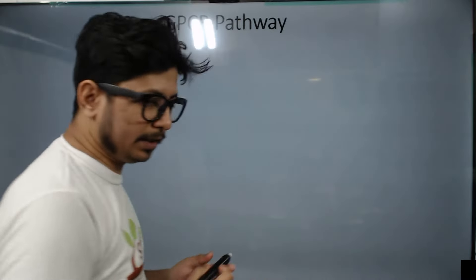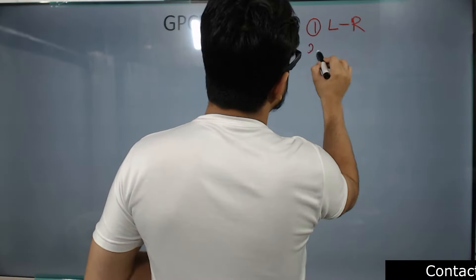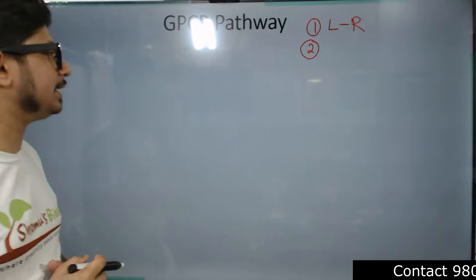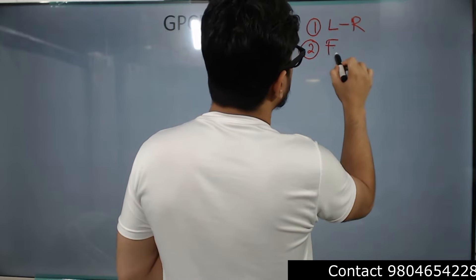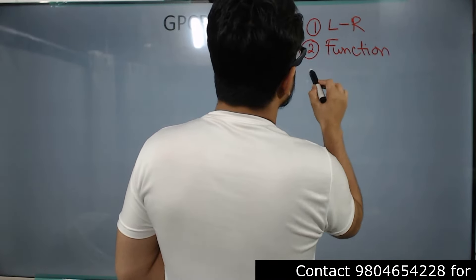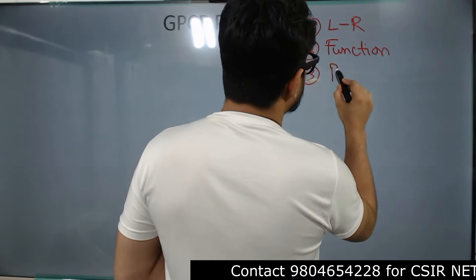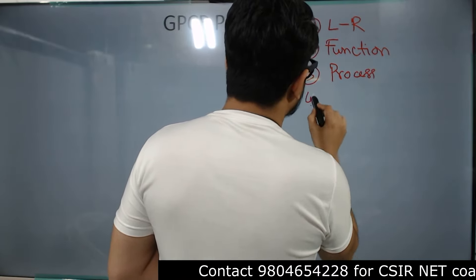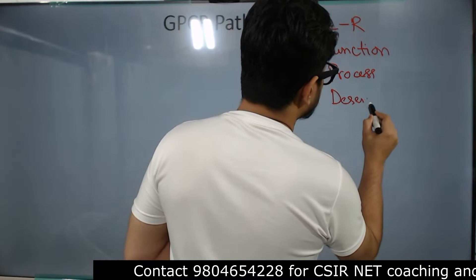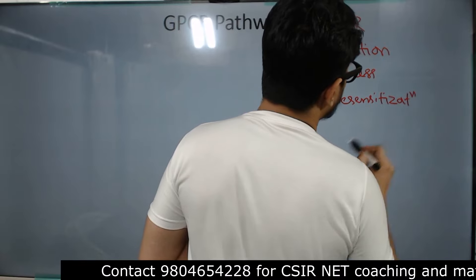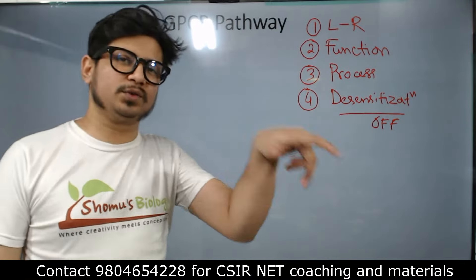The first important thing for any cell signaling process is the signaling molecule, ligand and receptor. The second important point is the role or function. The third important point for any cell signaling pathway is the process itself — how it is done. And the fourth and final point we need to understand is the desensitization — the off switch of this pathway.